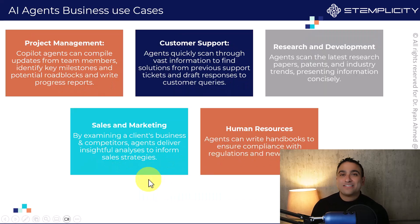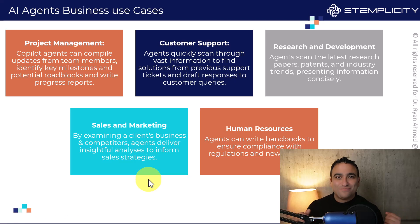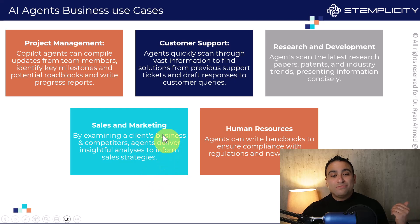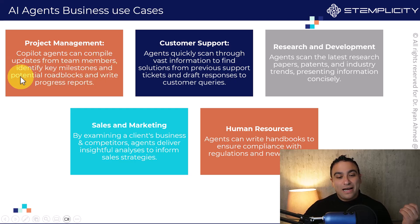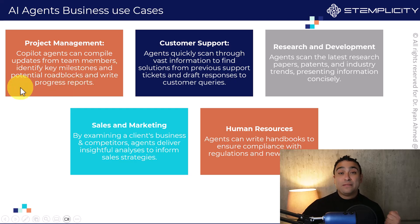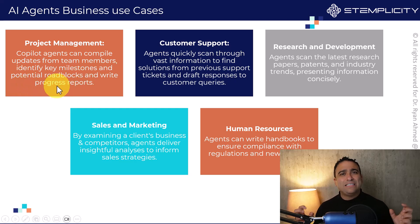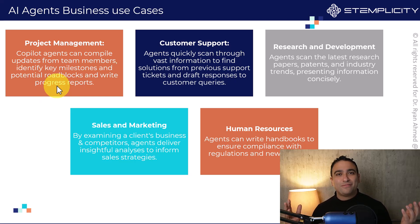Let's take a look at some use cases. Now that we know what agents are, where can we use them? You can use them in project management — Copilot agents can compile updates from team members, identify key milestones and potential roadblocks, and write progress reports. Think of it as a TPM, or technical program manager, at a given company.